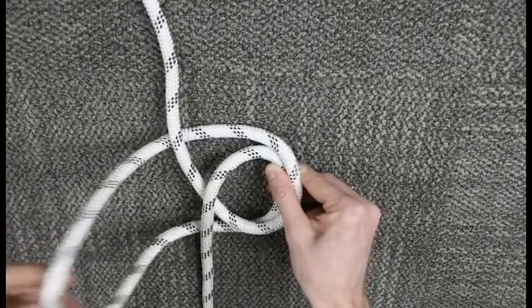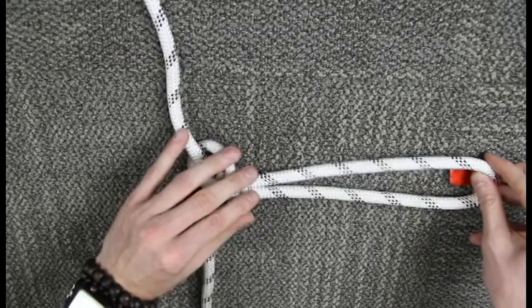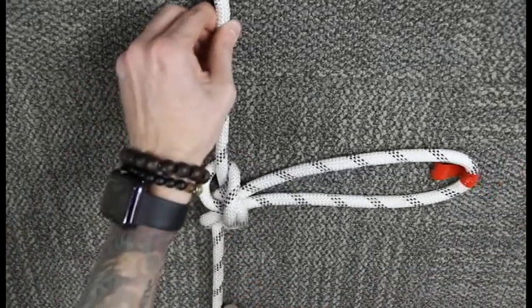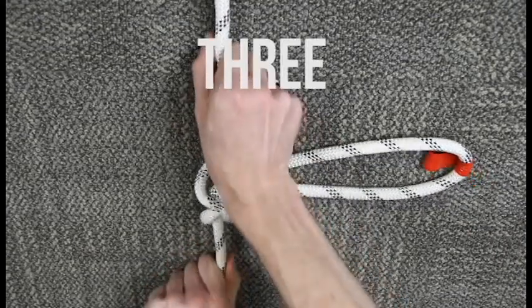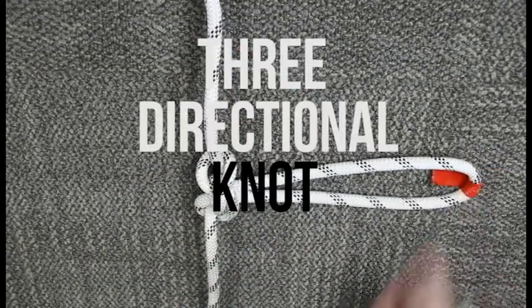I'll grab that top part of that around and through with the bite. And when you pull it tight, pull your strands, your long strands, not the bite, and you'll get that three-directional knot that you're going for with your isolated section here.